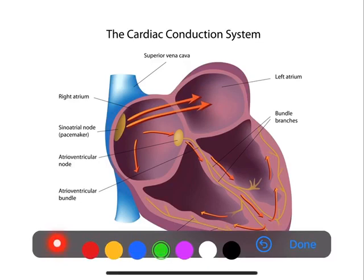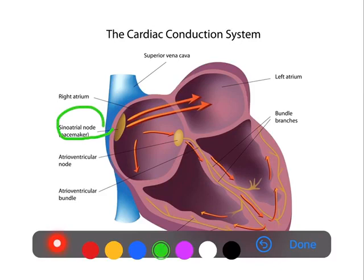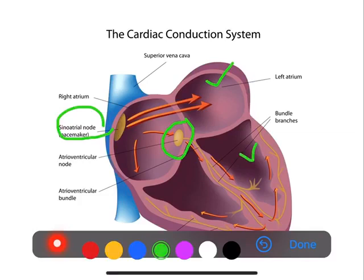Many parts of the heart are able to produce their own electricity or their own impulses, and they are called pacemaker cells. We can see these pacemaker cells in many parts of the heart. The most important one — the primary pacemaker — is the sinoatrial node. We also have pacemakers in the AV node, that is the atrioventricular node, as well as in the atrium and in the ventricles.